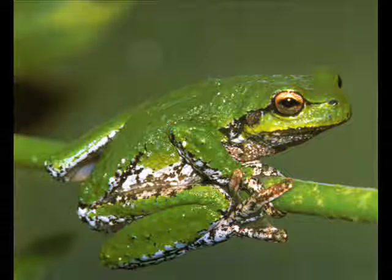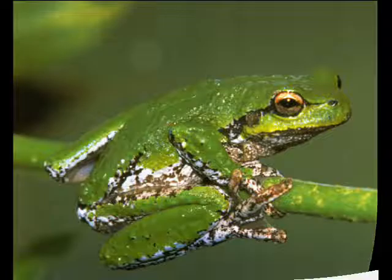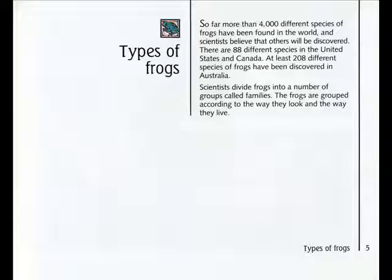Frogs, by Michael Tyler. So far, more than 4,000 different species of frogs have been found in the world, and scientists believe that others will be discovered. There are 88 different species in the United States and Canada. At least 208 different species of frogs have been discovered in Australia.